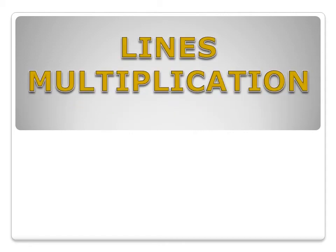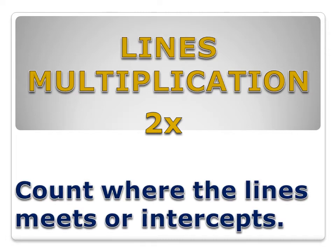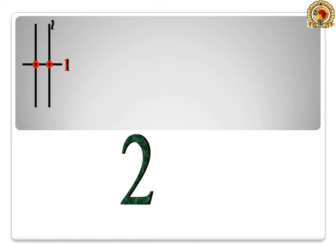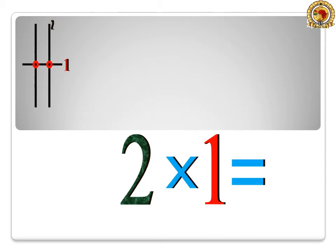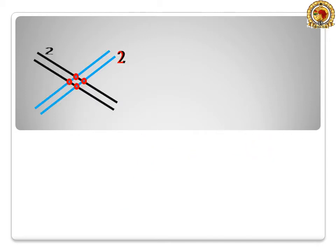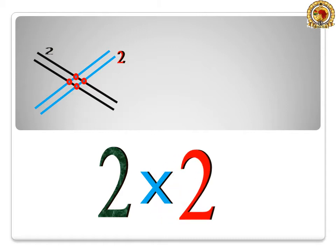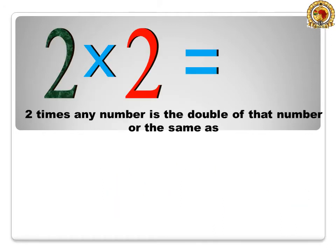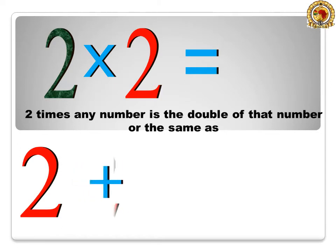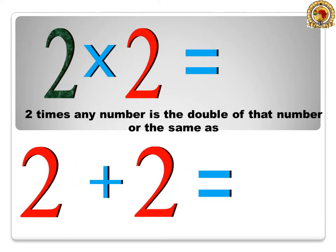Lines Multiplication: 2 times table. Count where the lines meet or intercept. 2 times 1 is equal to 2. 2 times 2 is equal to 4. 2 times any number is the double of that number, or the same as 2 plus 2 is equal to 4.